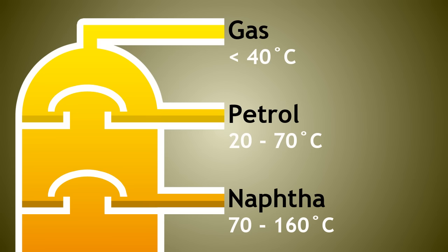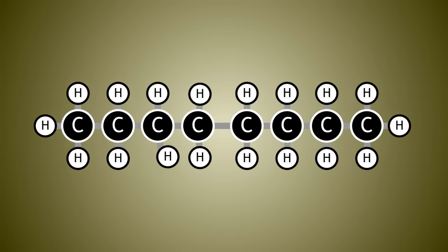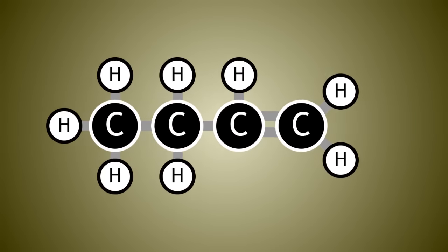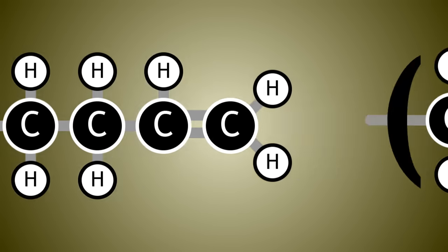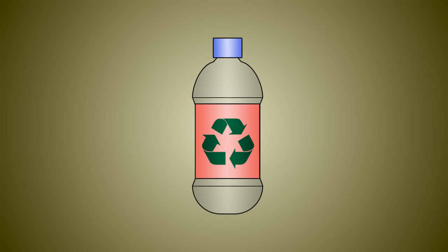Naphtha is not such a useful fuel, but it is a valuable source of organic molecules which can be cracked to make more fuels or form alkenes. Alkenes can be turned into polymers, and polymers can make plastics which are used in our everyday lives.